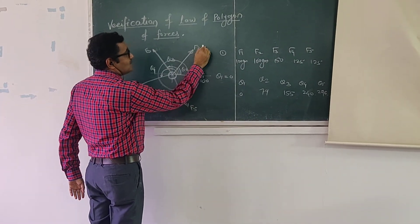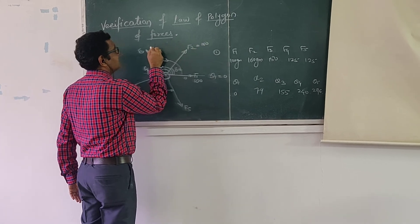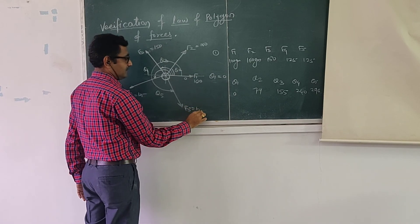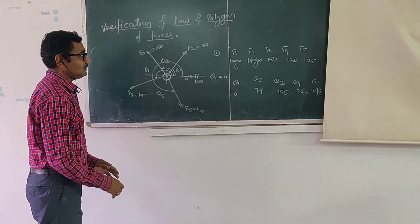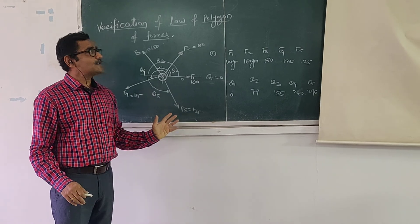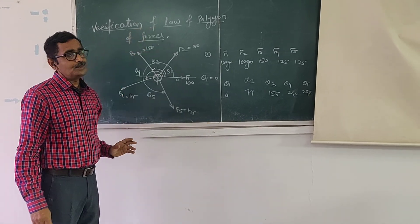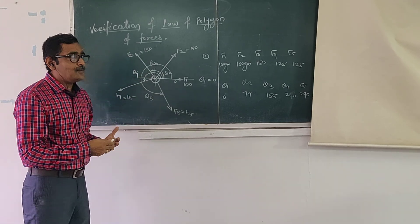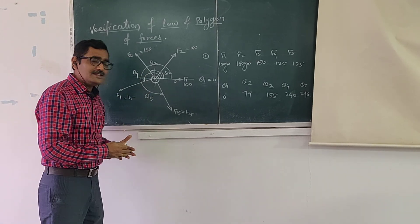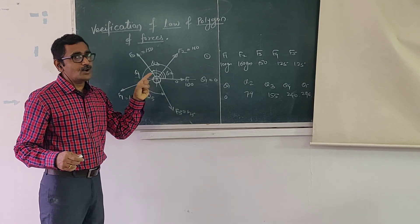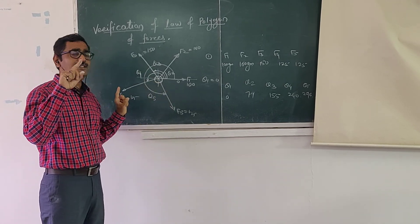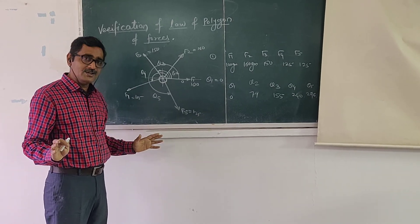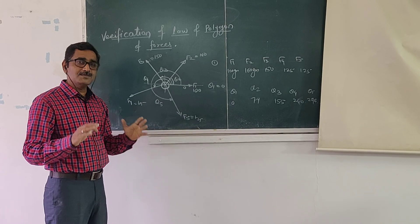So we have created one concurrent force system which is in equilibrium: F1 = 100 grams, F2 = 160 grams, F3 = 150 grams, F4 = 125 grams, and F5 = 125 grams. Now with the help of this force system, we have to verify the law of polygon of forces. With these five forces, if I plot the force polygon by representing these forces graphically, it must be a closed figure, because the system is in equilibrium and the resultant of the forces should be zero.